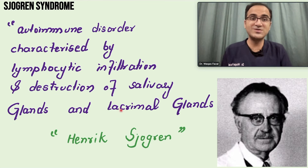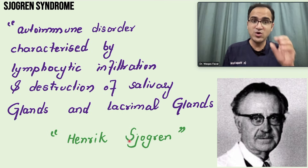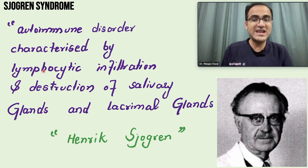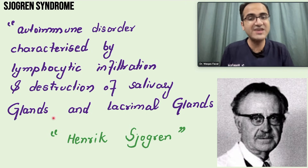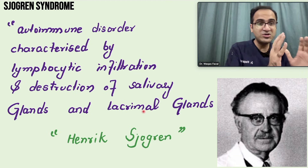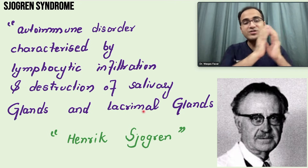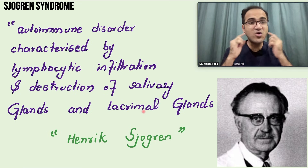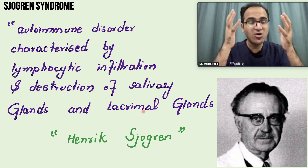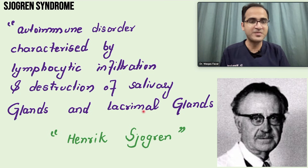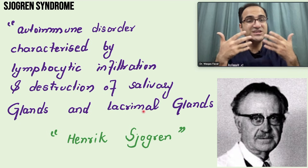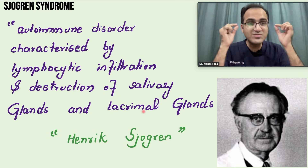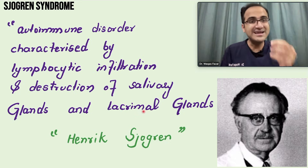Sjögren's syndrome is named after Henrik Sjögren, an ophthalmologist who discovered it in 1933. It is an autoimmune disorder characterized by lymphocytic infiltration and destruction of the salivary glands and the lacrimal glands. The immune system destroys the salivary glands, parotid glands, submandibular glands, and the lacrimal glands — essentially destroying all the secretory glands in the head. Destruction of the salivary glands results in decreased saliva production causing dry mouth, and decreased tear production from the lacrimal glands results in dry eyes.